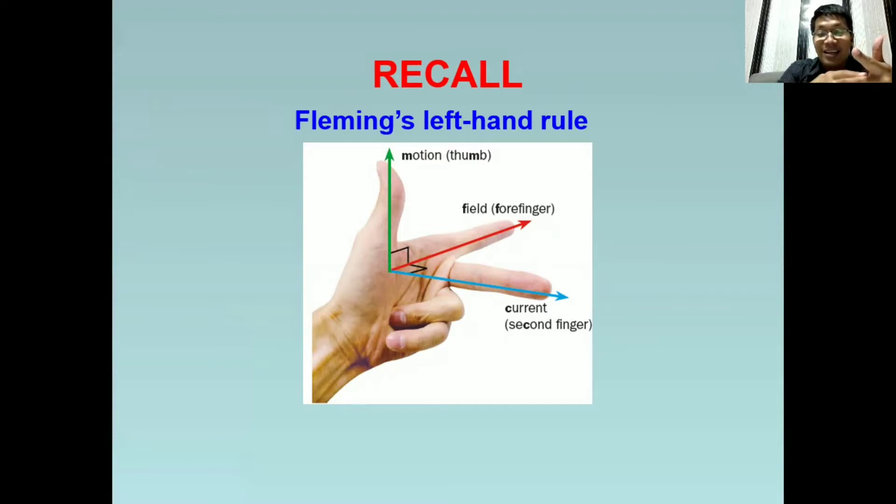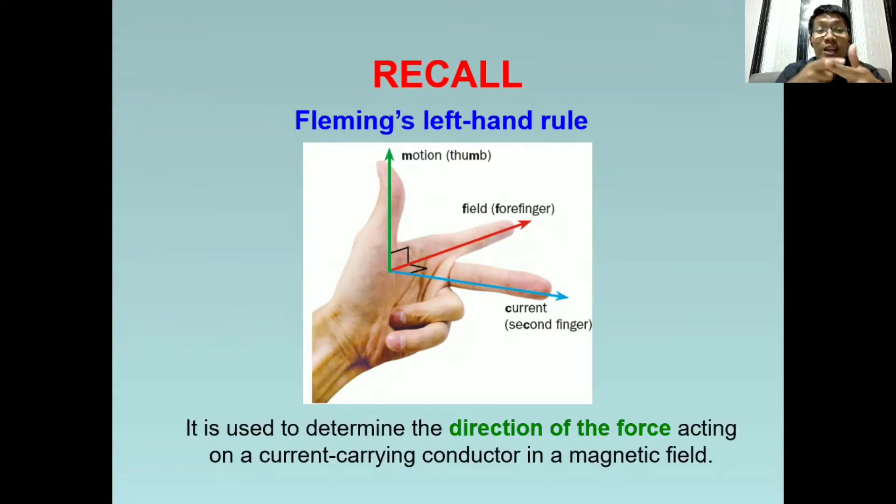And lastly, the middle finger represents the direction of the current. We are using Fleming's left hand rule to know the direction of the force where the conductor will move as it encounters the force. Let's note that the direction of the magnetic field is always from north to south.